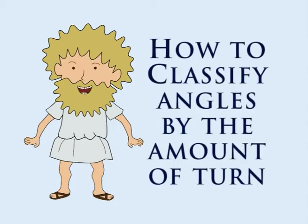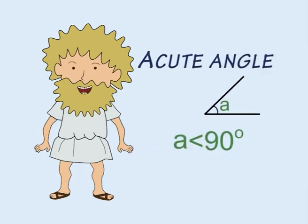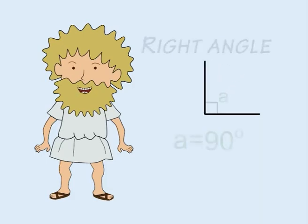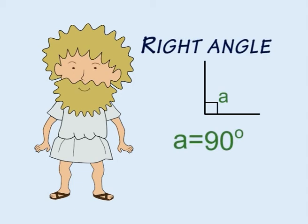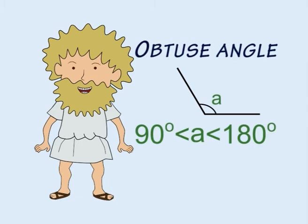Angles can be classified by the amount of turn between the arms. An angle that measures less than 90 degrees is called an acute angle. An angle that measures exactly 90 degrees is called a right angle. An angle that is greater than 90 degrees but less than 180 degrees is called an obtuse angle.